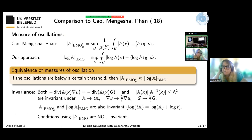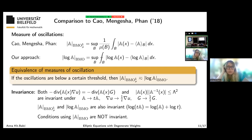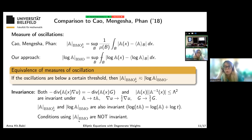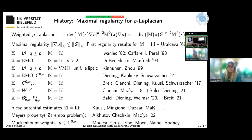With three minutes remaining, let me briefly mention scaling invariance. For weighted equations, some conditions are not scaling invariant in the sense that the left and right-hand sides of the equation scale differently when multiplying by t. Our condition involving the logarithm in BMO is scaling invariant, whereas taking just the weight measured in BMO is not, which is problematic from a PDE perspective.